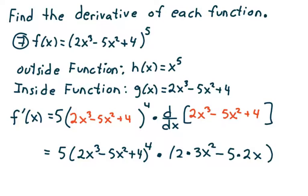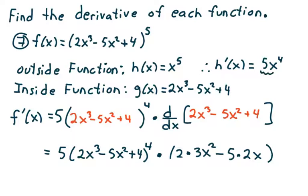Now, h of x equals x to the 5th, so h prime of x equals 5x to the 4th — that's just the power rule. When I look at f prime of x, I'm going to take the derivative of the outside function and evaluate it at the inside function. I'm going to replace x with 2x cubed minus 5x squared plus 4, giving me 5 times (2x cubed minus 5x squared plus 4) to the 4th.